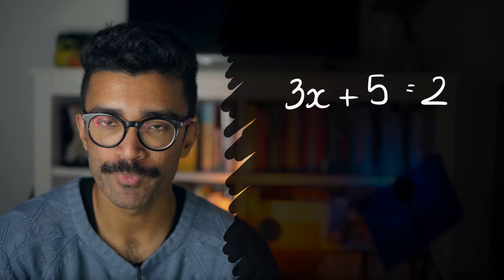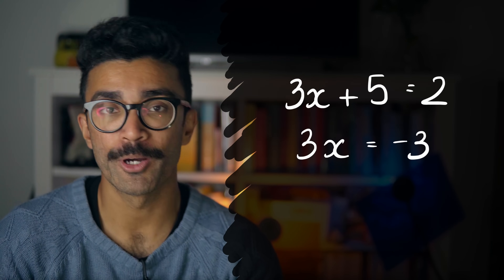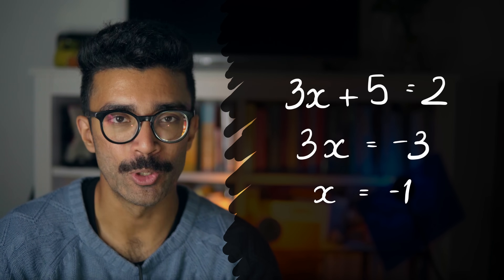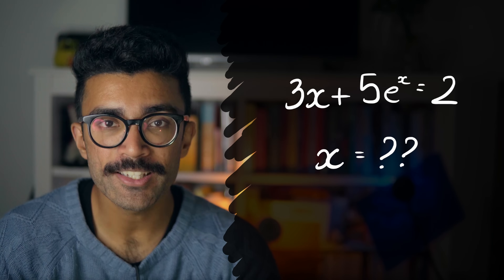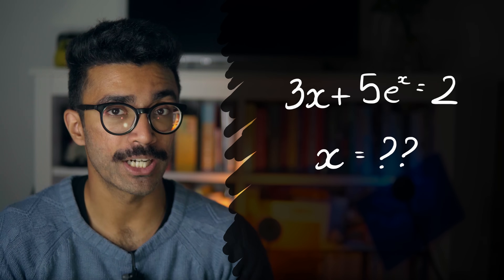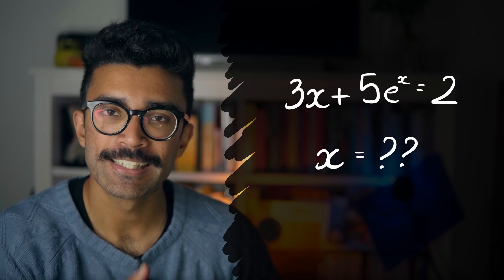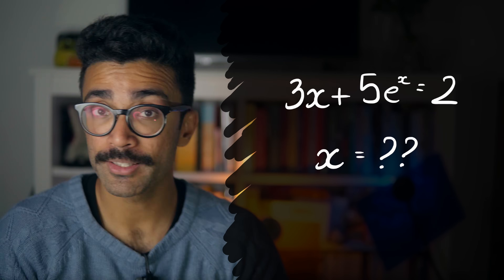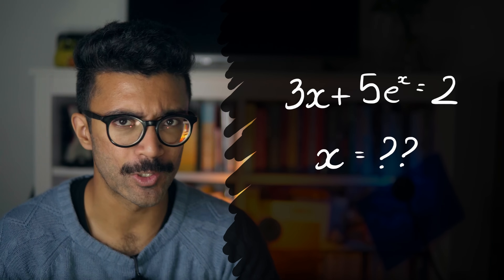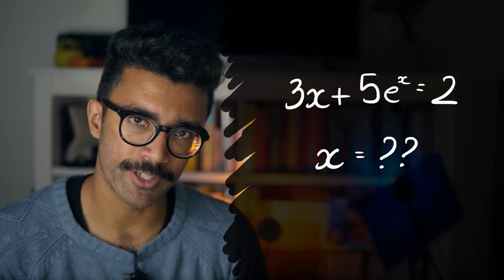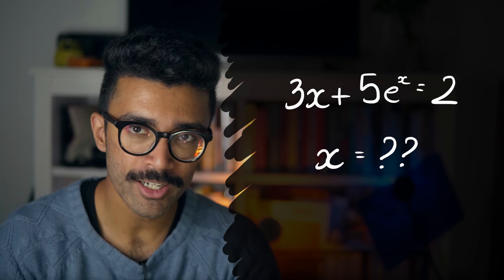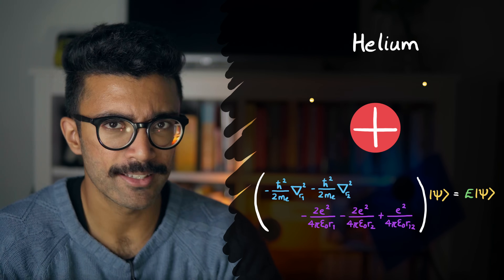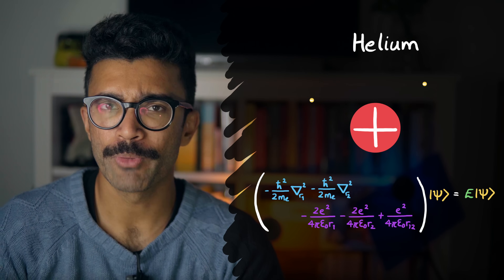We know techniques to solve for x — we rearrange and divide both sides by 3. But what if the equation looks like 3x + 5e^x = 2? This is much harder to solve because it's not easy to isolate x. It's not impossible — we have some techniques including computers — but it's far harder than the first example. In a similar way, the Schrödinger equation derived for helium is extremely difficult to solve; we don't have many analytical techniques to find psi.